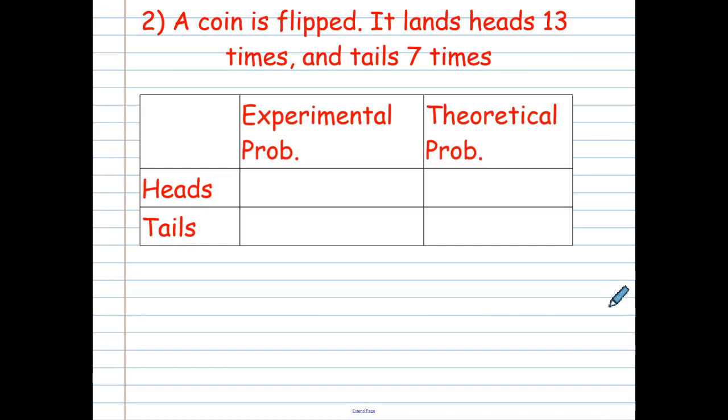So now let's think about this. A coin is flipped. It lands on heads 13 times and tails 7 times. Let's figure out experimental probability. Probability of landing on heads is 13 times it happened. So let's put 13 on top. And if I add 7 and 13, I get 20. So it's 13 out of 20 for our experimental probability. And tails landed 7 times out of 20.